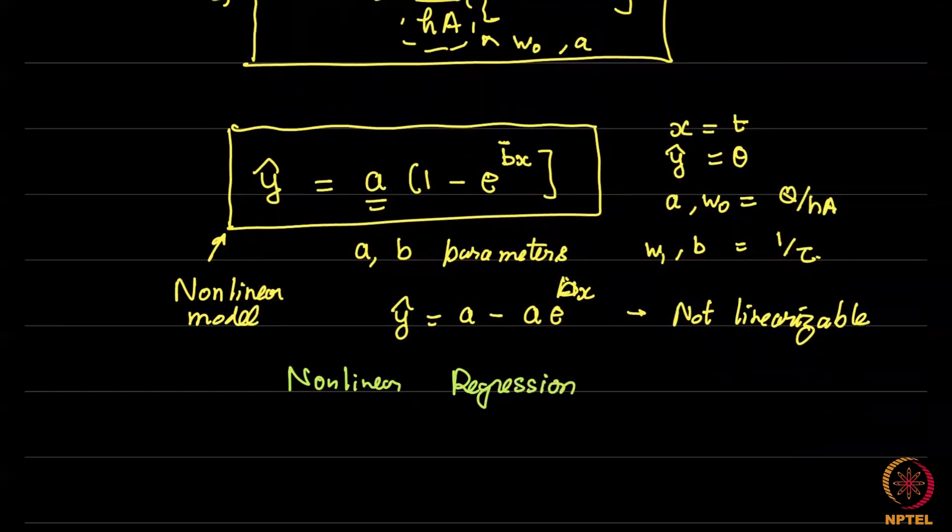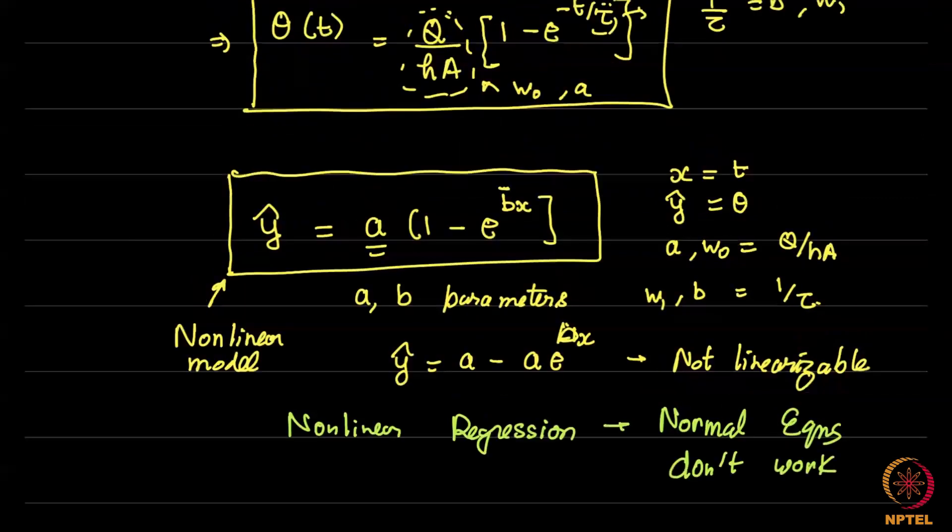You cannot take log, you cannot do anything clever and somehow turn it into a problem which is linear in A and B. This is exactly why you need non-linear regression. So, there is no simple solution to this. Just like we did linear regression, we will have to do non-linear regression. Unfortunately, for non-linear regression, normal equations do not work. Because normal equations work because you had a system of linear equations. So, this is a system of non-linear equations.